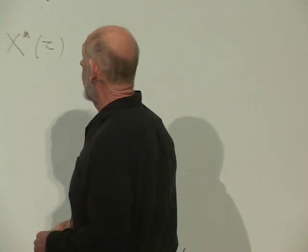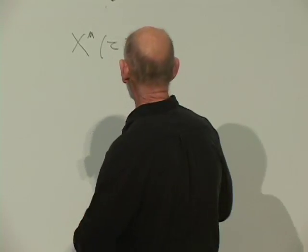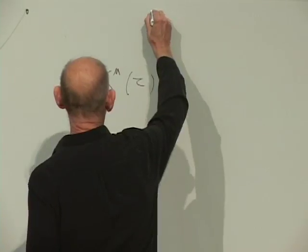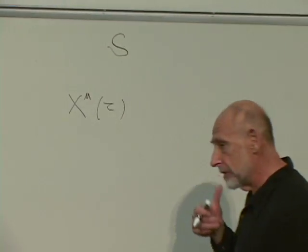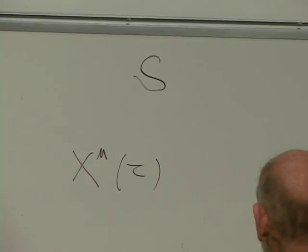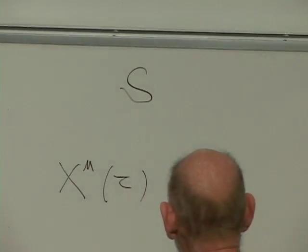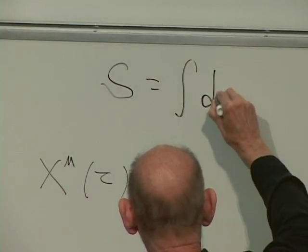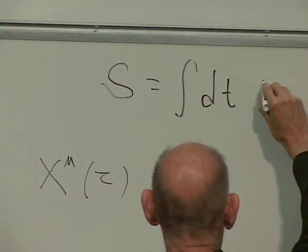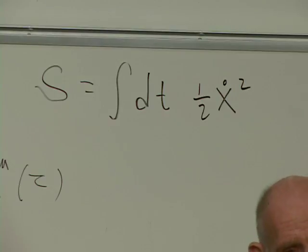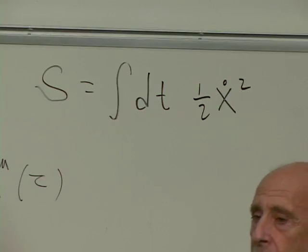In each case, the motion of a particle is defined by an action and the principle of least action. For a non-relativistic free particle, the action S — the same label we use for entropy, which in many cases entropy and action turn out to be numerically the same thing — is the integral over time of the kinetic energy, one-half x-dot squared, with the mass set to one.